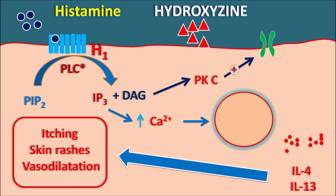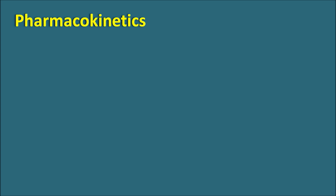Hydroxyzine acts as an antagonist at the H1 receptors. By binding to H1 receptors, it inhibits their activity and antagonizes the action of histamine. In this way hydroxyzine prevents itching, skin rashes, and the vasodilatory response that produces redness and inflammation within the skin.